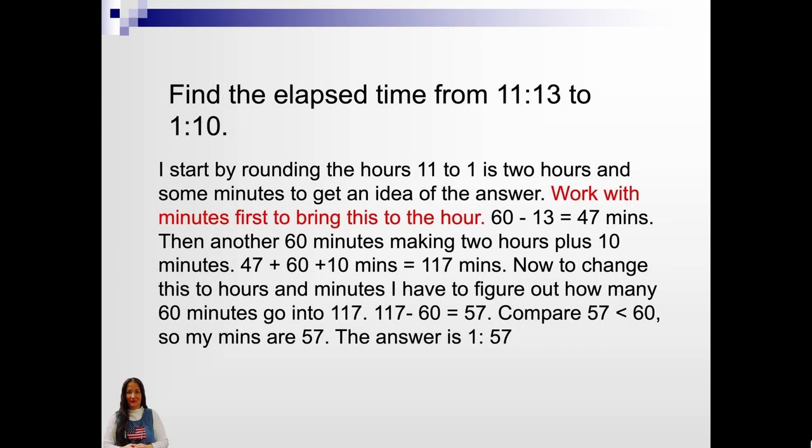These problems are for older children to look at and figure out. The young child would have difficulty with this. This is 2nd to 3rd grade problems. Find the elapsed time from 11:13 to 1:10. I start by rounding the numbers. 11 to 1 is 2 hours and some minutes to get an idea of the answer. Work with minutes first to bring this to the hour. 60 minus 13 is 47 minutes.